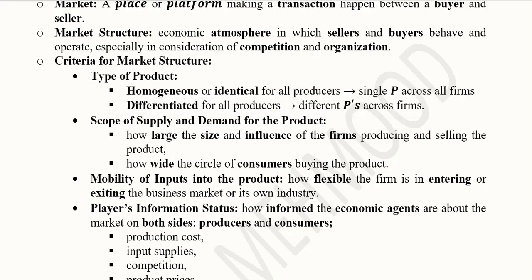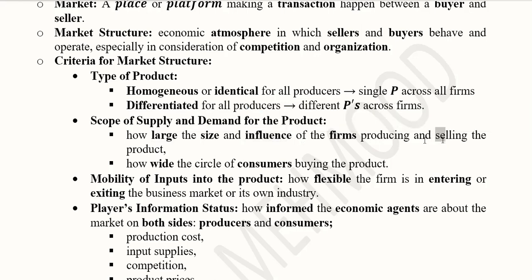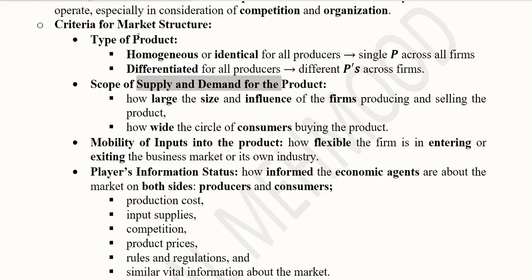Another criterion for defining market structure is the scope of supply. Firms that are producing can be large or small, and they can vary in terms of their influence and how they sell their products. Their supply patterns can differ — they can be small firms or large firms, virtual or physical. On the demand side, consumers can differ in terms of their demographics and how wide the consumer base is. These features help define market structure by showing how supply and demand of a certain product differ across various market structures.